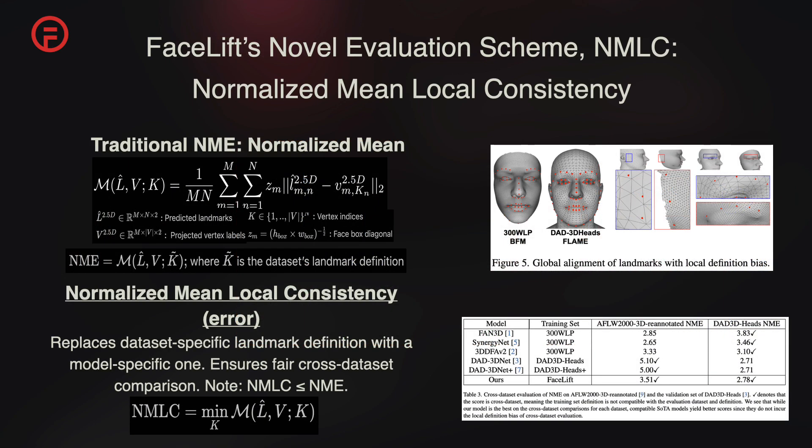Previous methods compare using the normalized mean error metric, which assumes a fixed set of vertex indices of a face mesh as the landmark definition. While global alignment is shared across datasets, each dataset has its own local definition bias, as can be seen on the right. Since our landmark definition varies, for the purpose of fair evaluations, we consider a model-specific definition as a normalized mean consistency error metric to adjust for the local definition bias, by enabling each model to select the vertex indices which minimize its normalized mean error across the evaluation set.